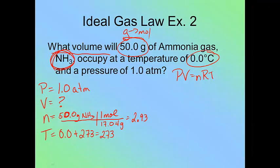So now I just plug everything into my formula. Pressure is 1. V is what I'm solving for. N is 2.93. R is 0.0821. And my temperature is 273.